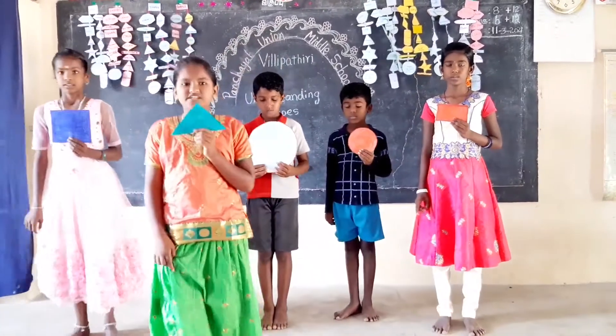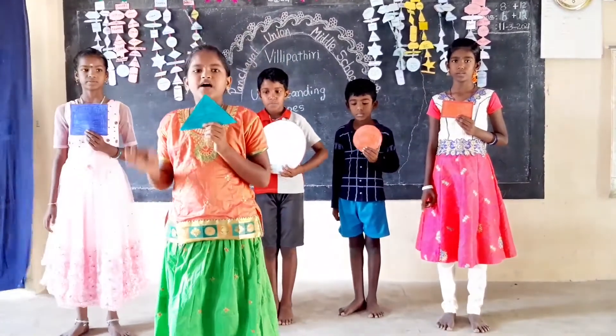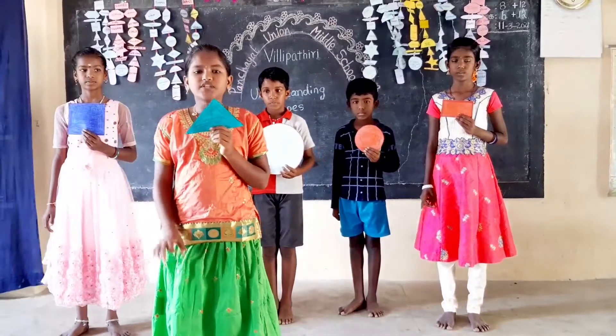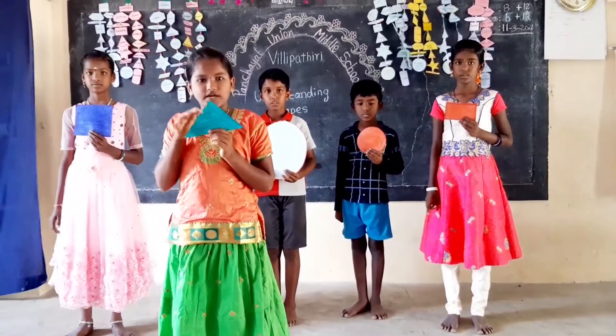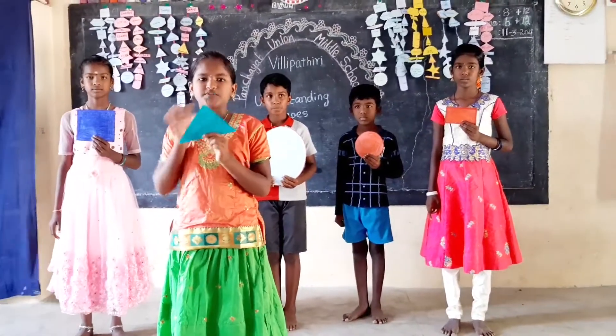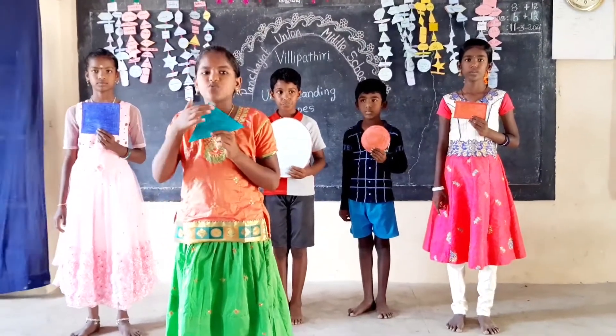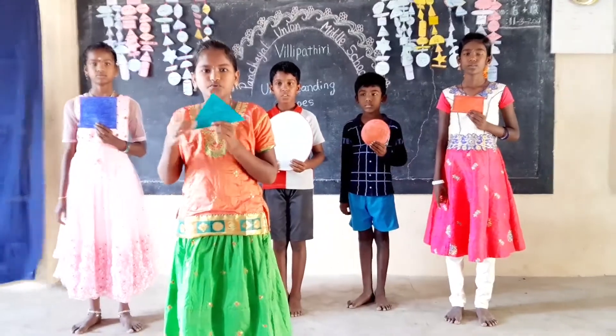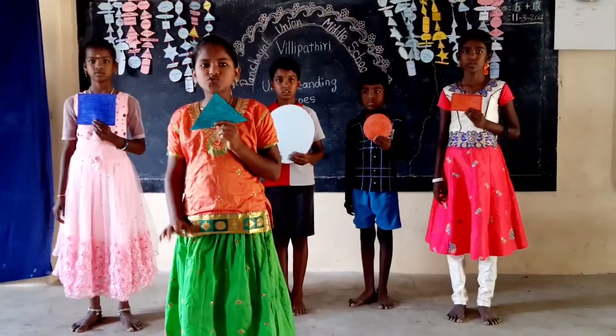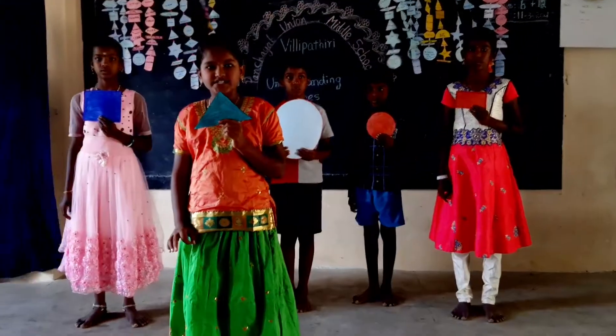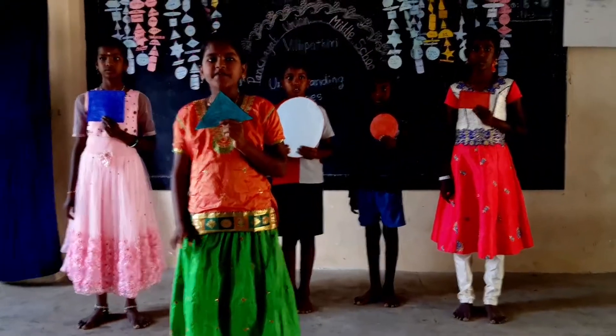I am triangle shape! I have three sides — one, two, three — and three angles — one, two, three! I am a closed two-dimensional shape with three straight sides.